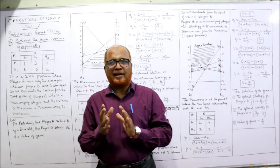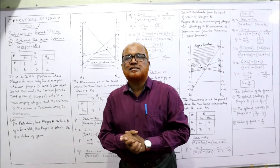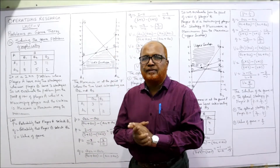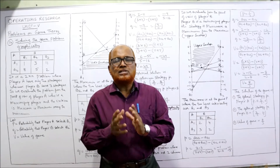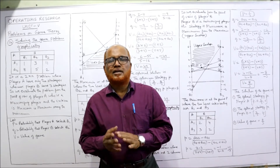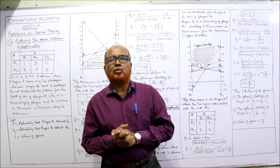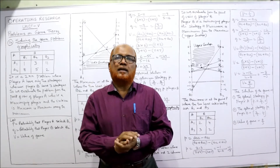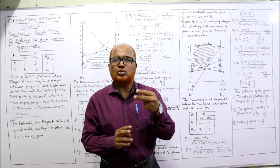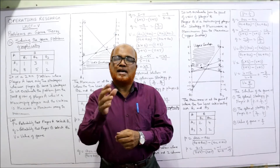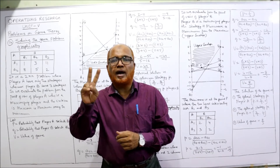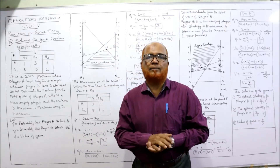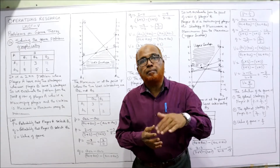Hello viewers, welcome to my channel. I'm Hashem Ali Khan. This is the last and final video on game theory. I'm going to explain two more problems: 14th and 15th. In the last video I explained the graphical method, which covers two strategies: a 2×n problem and an n×2 problem. 2×n means only two rows but n columns, whereas n×2 means n rows and two columns.